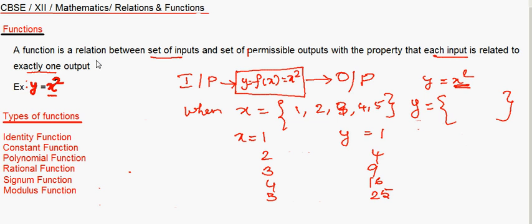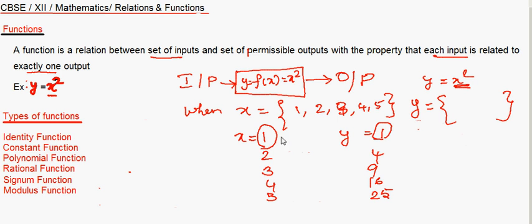So that is what is meant: a function is a relation between a set of inputs and a set of permissible outputs, with the property that each input gives exactly one output. You cannot say that when I give input 1, the output can be both 1 and 4. When I square 1, the output can only be 1.